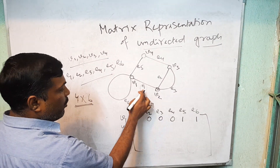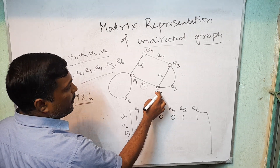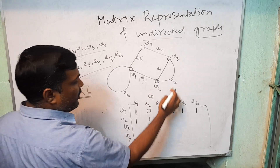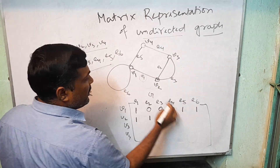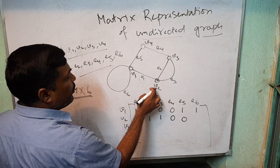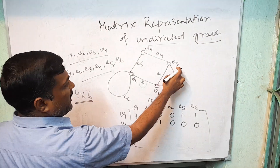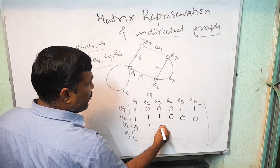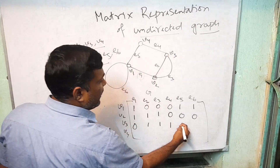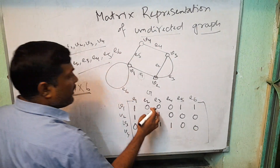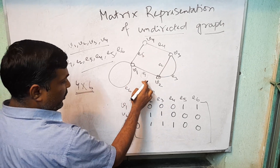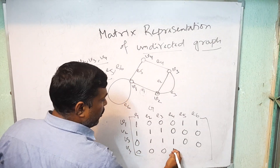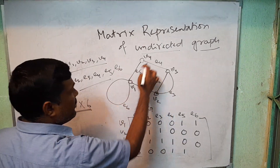V2 incident to E1: yes, 1. V2 incident to E2: yes — E2 has end vertices V3 and V2, so 1. V2 incident to E3: yes, 1. V2 incident to E4: no. V2 incident to E5: no. V3 incident to E2: yes. V3 incident to E3: yes. V3 incident to E4: yes. V3 incident to E5: no. V3 incident to E6: yes. V4 incident to E1: no. V4 incident to E2: no. V4 incident to E3: no. V4 incident to E4: yes. V4 incident to E5: yes. V4 incident to E6: no.